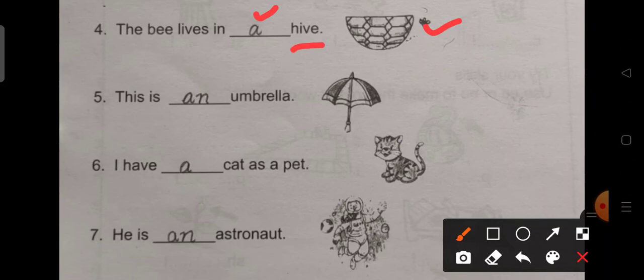Number 5. This is dash umbrella. This is an umbrella. The word umbrella begins with a vowel sound.